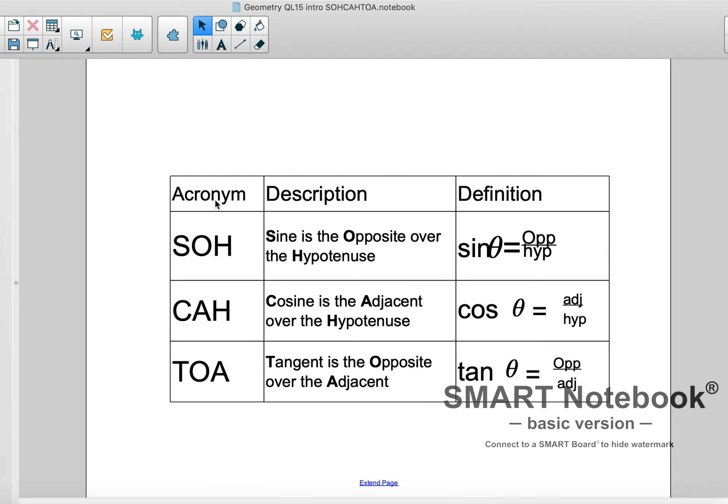If you want to take a look at this acronym, SOH, sine is the opposite over hypotenuse, the definition. Again, CAH, cosine is the adjacent over the hypotenuse. TOA tangent is the opposite over the adjacent.